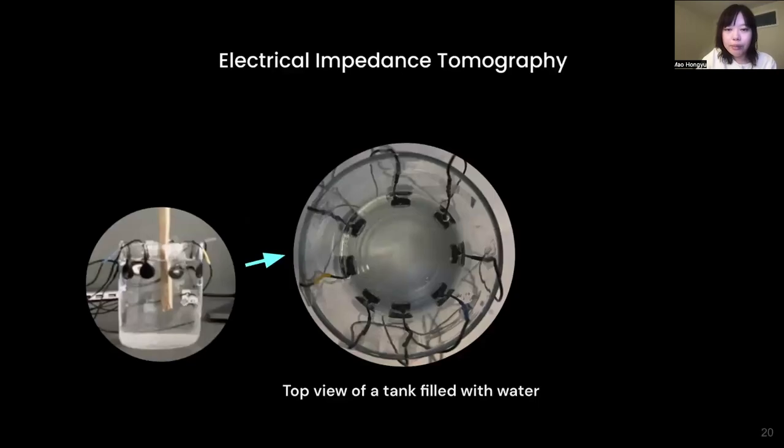Now, let's talk about what is EIT and how it works for hand pose tracking. Electrical impedance tomography is an imaging technique that could detect the internal impedance distribution and get the 2D reconstructed image of the measured objects.